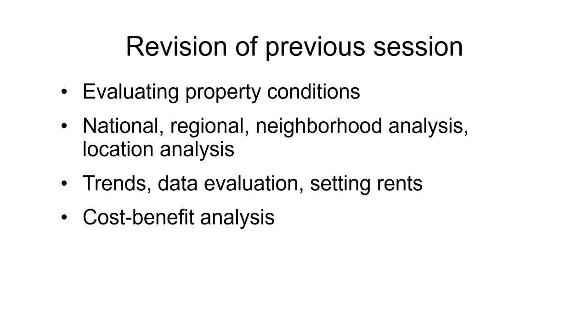That was covered in the previous session and we also looked at what trends are imminent from all these analyses. When we analyze national, regional and neighborhood issues, certain trends emerge, then we go for the data coming from all this, we evaluate it, and on the basis of that we strategize — we set our rents and in the last we do a cost benefit analysis. If we are suggesting any specific changes to the management, whether it is strategy or increasing rent, we have to convince that the cost benefit analysis is pointing us in the right direction and this change will be profitable.